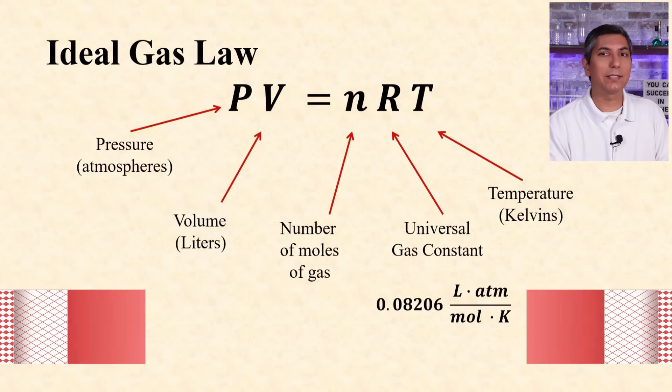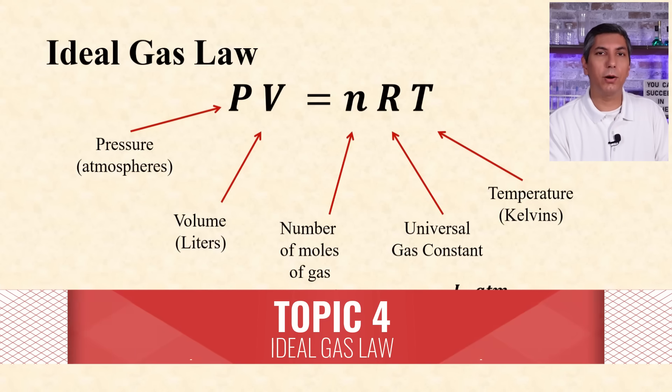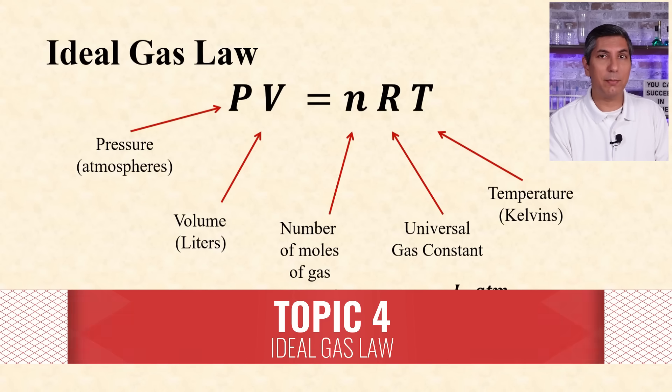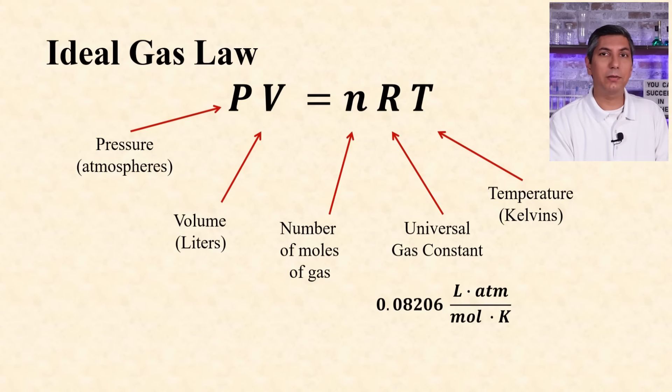Be able to use the ideal gas law, PV equals nRT. Pressure is in atmospheres, volume is in liters, n is the number of moles of gas, and t is the temperature in kelvins. R will be the universal gas constant, which is equal to 0.08206 liter atmospheres per mole kelvin. With the constant and three of the four variables, you can solve for the unknown.